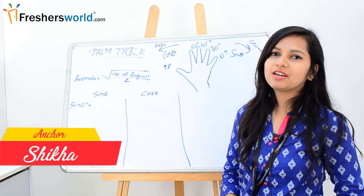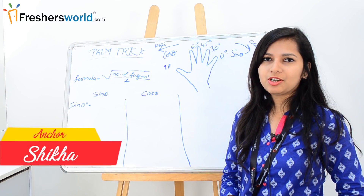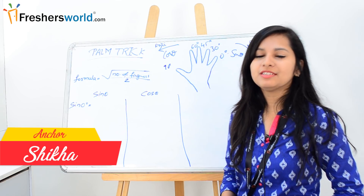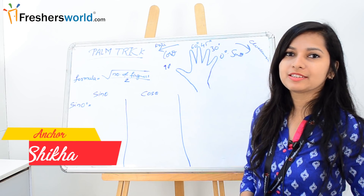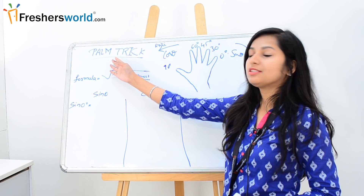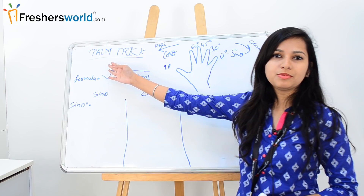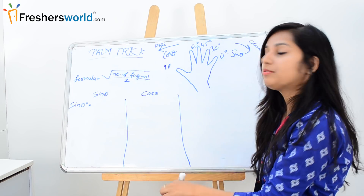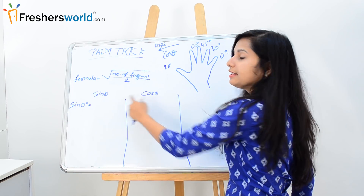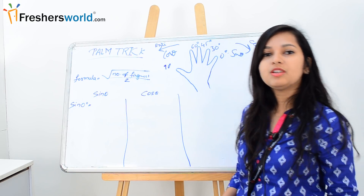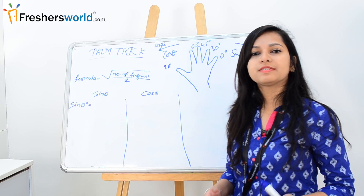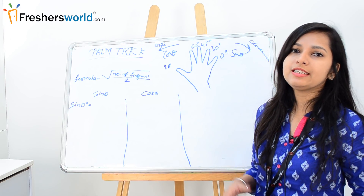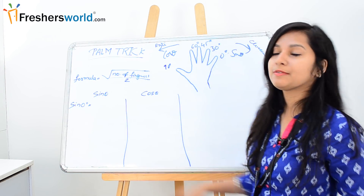Hi friends, this is Shikha from Freshersworld.com and welcome to our YouTube channel Jobs and Careers. Today we are going to discuss about the trick called the palm trick. In this trick you can find out the value of sin theta and cos theta, because if you remember the value of sin theta and cos theta, you can easily find out the value of the rest.